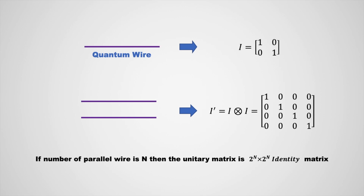Before discussing about the logic circuits, I will mention few things. First of all, you have to know the identity matrix, tensor product, and the overview of gates, which I have already discussed in earlier classes. And here, I again mention quantum wire, parallel quantum wire, and a few examples.